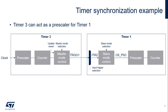This slide shows a simple example of timer synchronization. Timer 3 is used as the master timer and can reset, start, stop, or clock the timer 1 configured in slave mode. In this example, timer 3 is clocking timer 1 so that it acts as a prescaler for timer 1.